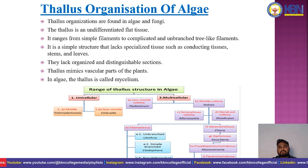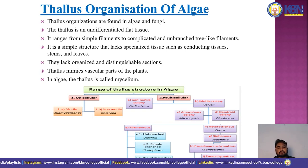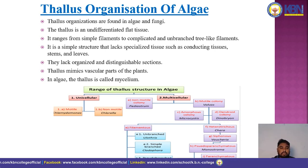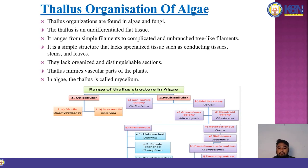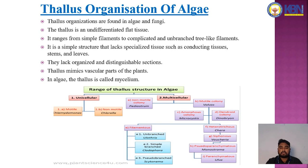The range of thallus structure in algae is of two types: unicellular and multicellular. Unicellular is differentiated into two types: motile (example: Chlamydomonas) and non-motile (example: Chlorella). Multicellular algae is differentiated into eight types: non-motile colony, motile colony, anthroporous colony, dendroid colony, heterotrichous, siphonose, pseudoparenchymatous, parenchymatous, and filamentous.